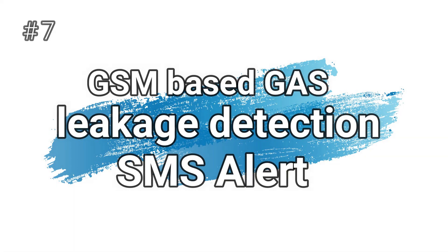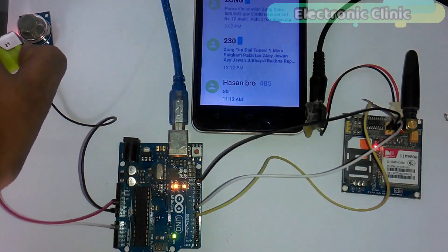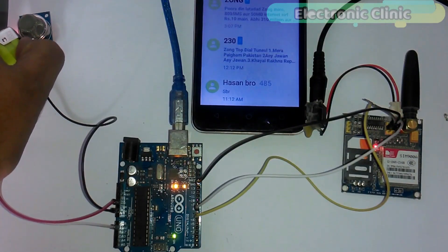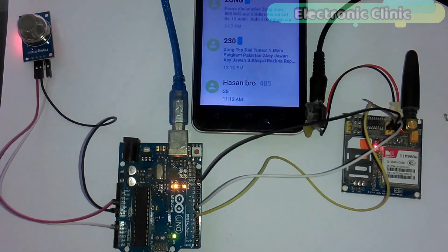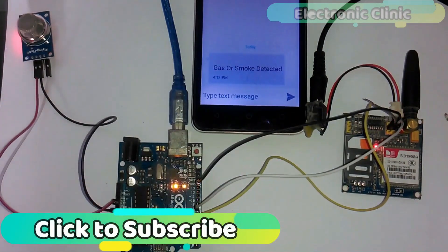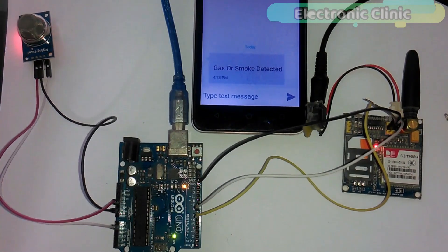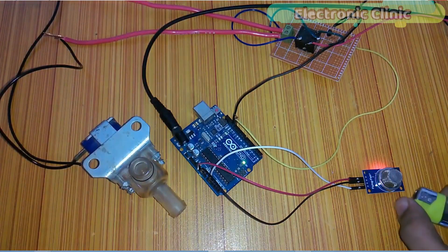Number 7: GSM based gas leakage detection and SMS alert system. This project is based on smoke or gas leakage detection. When gas or smoke is detected, a message is sent to the desired person using a GSM module. Unlike other projects, this project can also be modified by adding a solenoid valve for automatic valve shutdown.